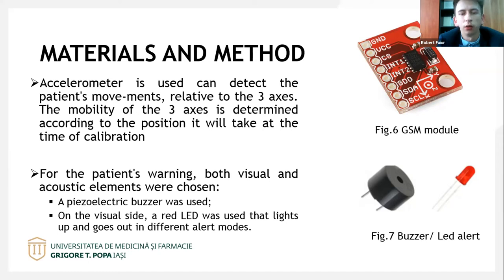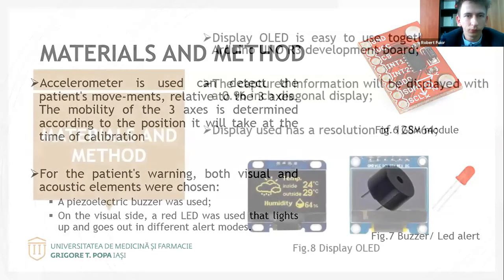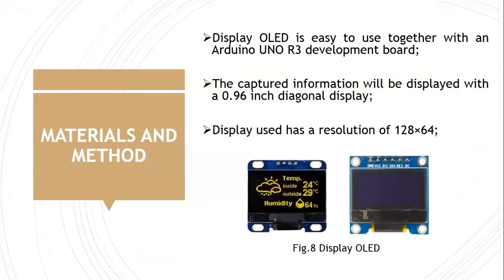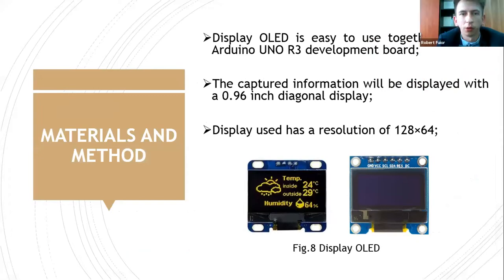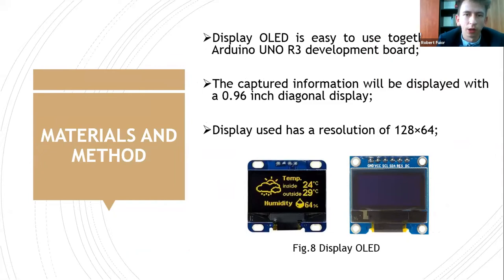On the visual side, a red LED was used, lighting up according to different alert mode visuals. The OLED display is used together with the Arduino Uno development board, capturing and displaying information on a 0.96 inch diagonal display.